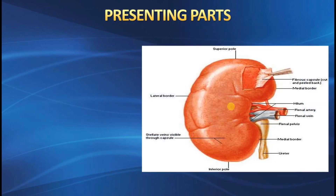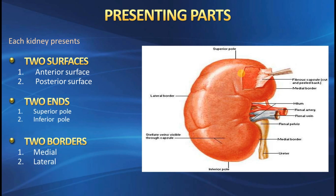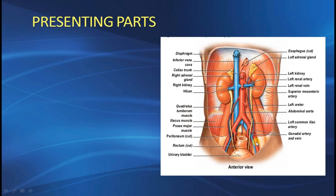Coming to the presenting parts: the kidney has two poles — upper pole and lower pole; two surfaces — anterior surface and posterior surface; and two borders — lateral border and medial border.